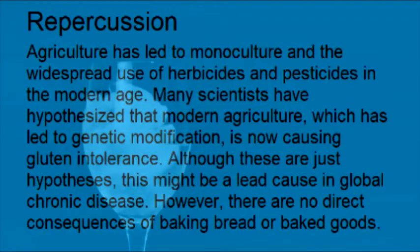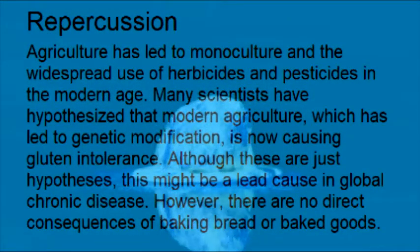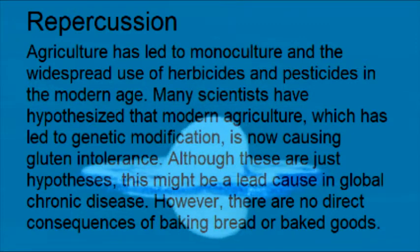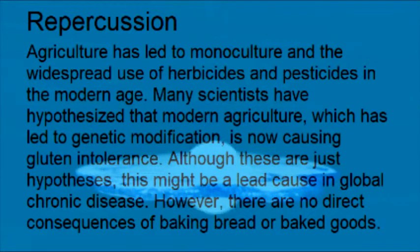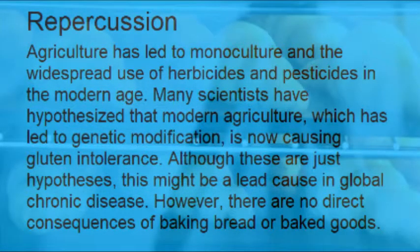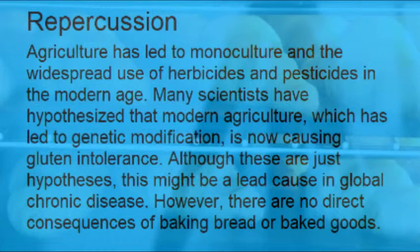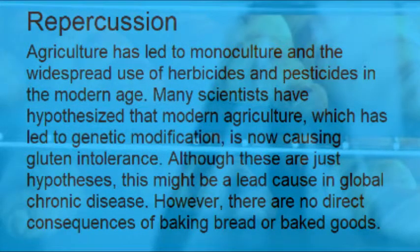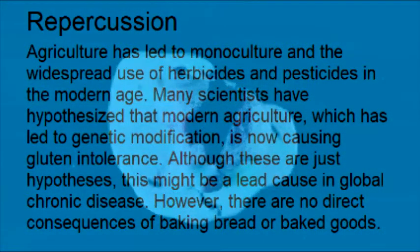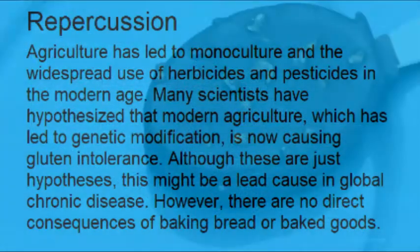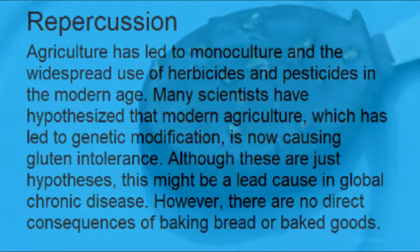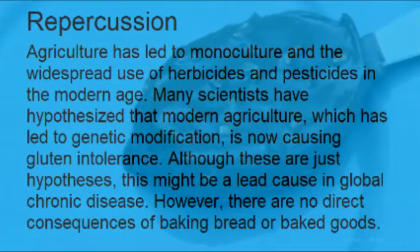Agriculture has led to monoculture and the widespread use of herbicides and pesticides in the modern age. Many scientists have hypothesized that modern agriculture, which has led to genetic modification, is now causing gluten intolerance. Although these are just hypotheses, this might be a lead cause in global chronic disease. However, there are no direct consequences of baking bread or baked goods.